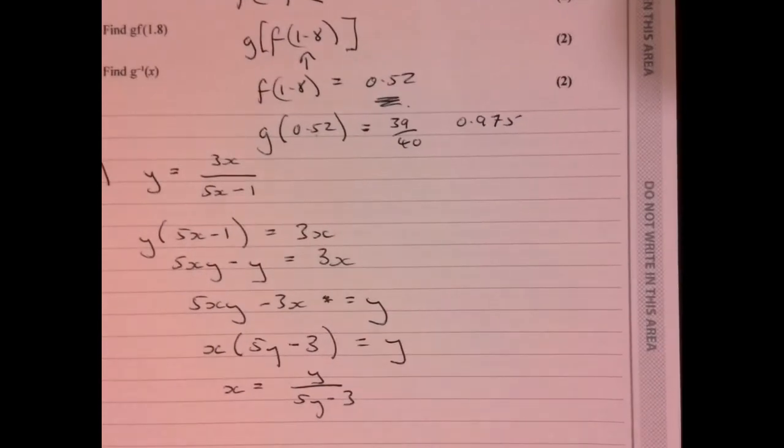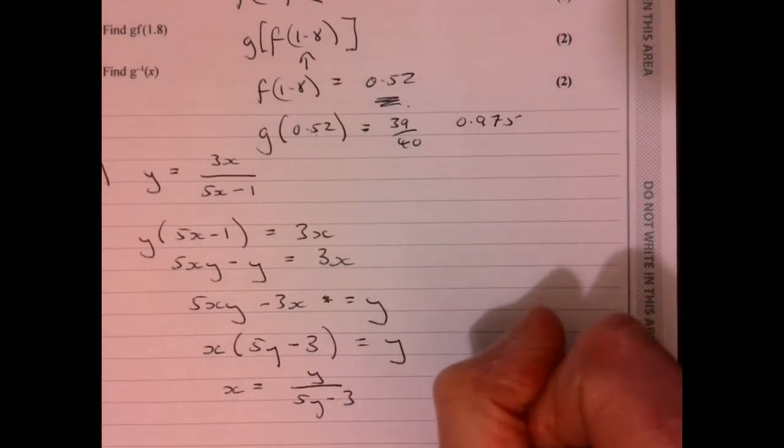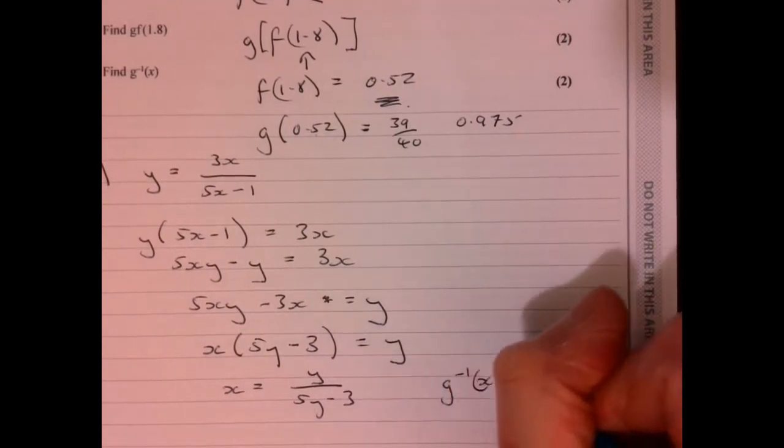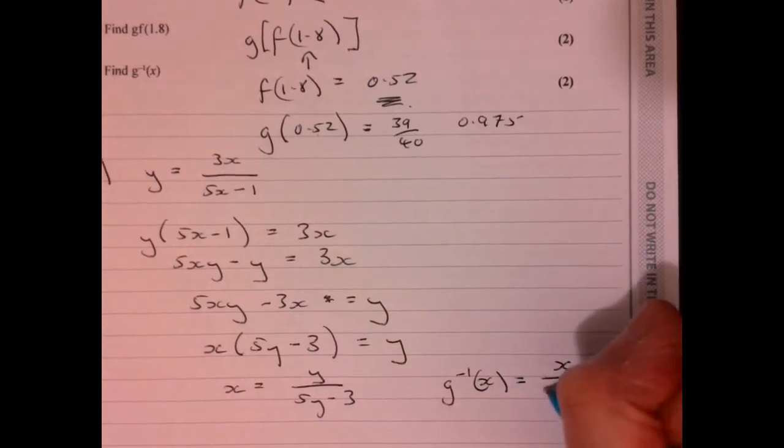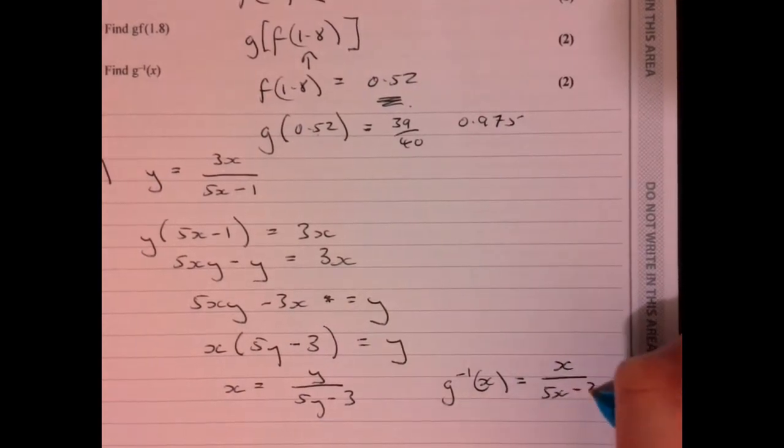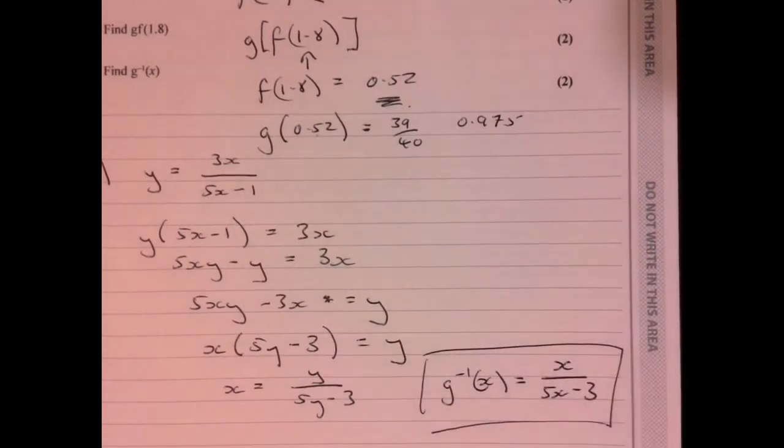Now to write this down properly, this seems a little bit odd, but we're just going to write down our inverse function of x. Remember, we just used this y as a vehicle to reverse the process. So it's actually g inverse of x equals x over (5x minus 3). And there we go, job done.